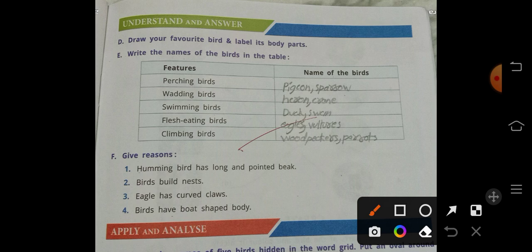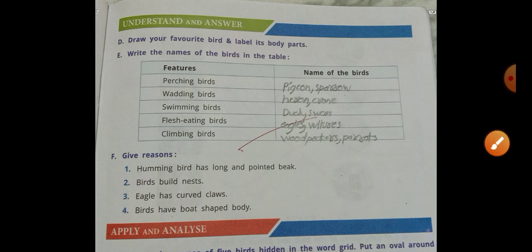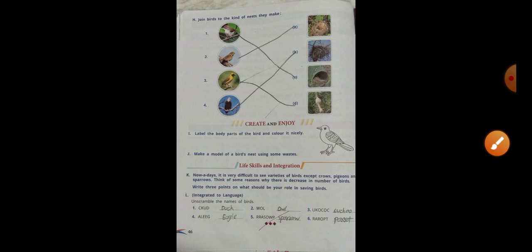Perching birds are pigeon and sparrow. Wading birds: heron and cranes. Swimming birds: duck and swan. Flesh-eating birds: eagles and vultures. Climbing birds: woodpeckers and parrots. Give reason, we will discuss at the last part.